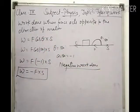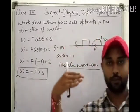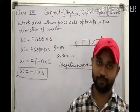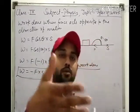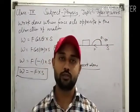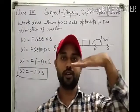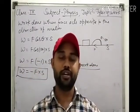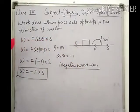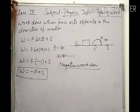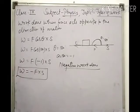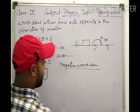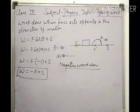Understand carefully: whenever we apply force on any object in the opposite direction — for example, you are riding a cycle and your friend applies force in the opposite direction — in this condition the work done is negative work done, because the force is applied opposite to the direction of motion.